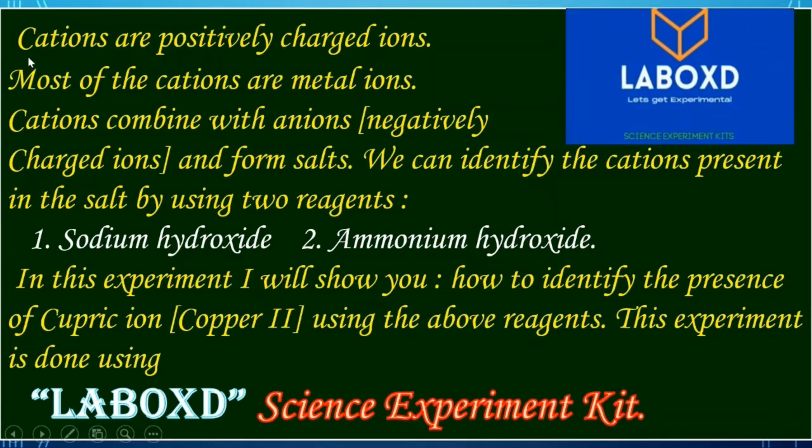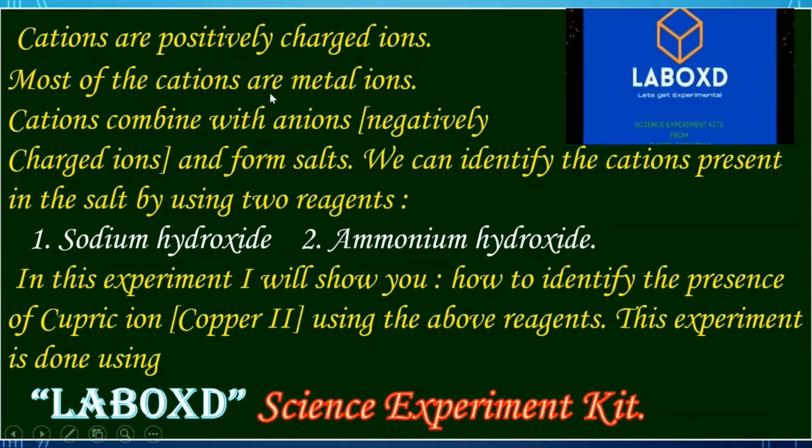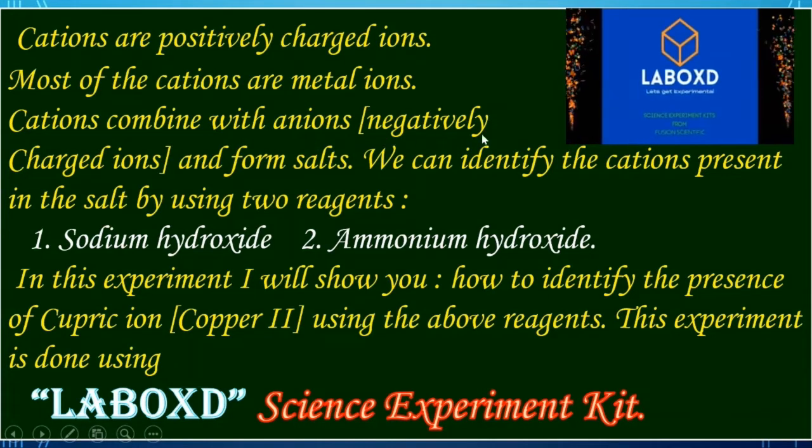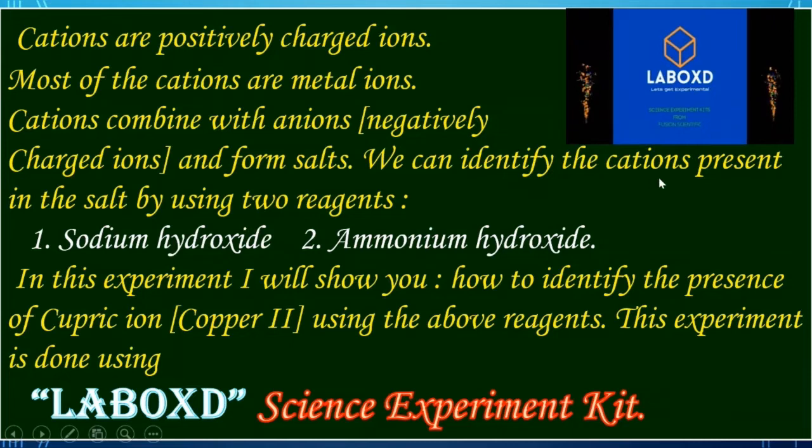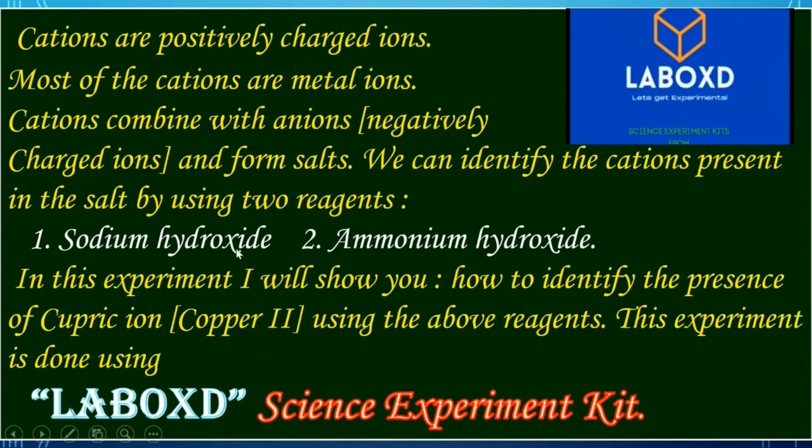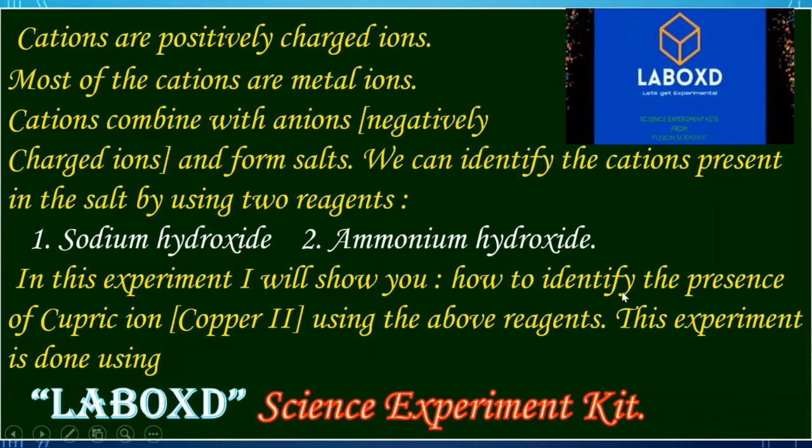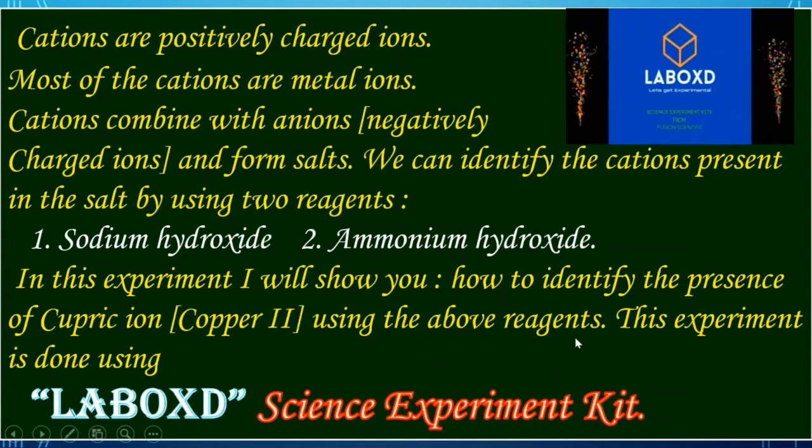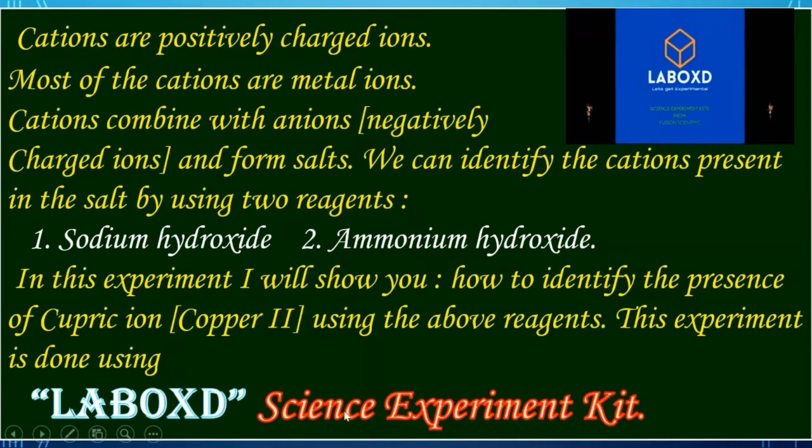Cations are positively charged ions. Most of the cations are metal ions. Cations combine with anions, that is negatively charged ions, and form salts. We can identify the cations present in the salt by using two reagents: sodium hydroxide and ammonium hydroxide. In this experiment, I will show you how to identify the presence of cupric ion using the above reagents. This experiment is done using Labox D's experiment kit.